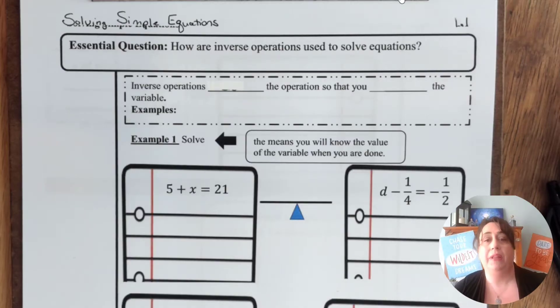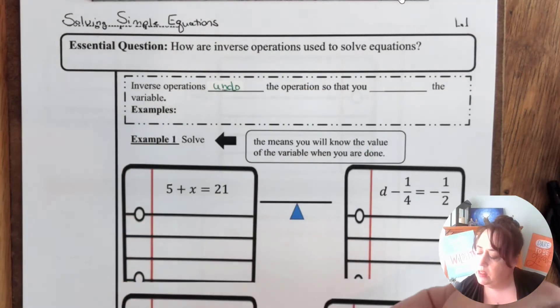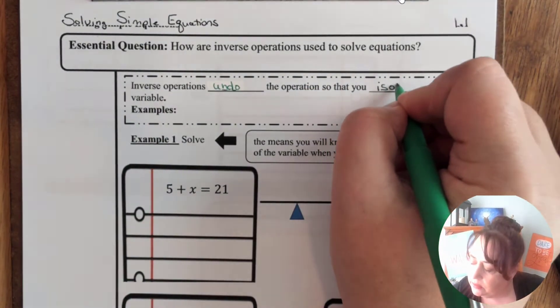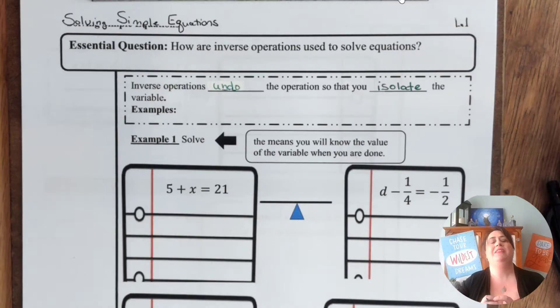Inverse operations blank the operation so that you blank the variable. Inverse operations, what do they do? They undo the operation so that you isolate. Now some of you might not know what isolate means. If you were put into isolation, that means that you are put all by yourself. So what we're trying to do is we're trying to get the variable all by itself. You might want to add that reminder right here that that means all by itself. Remember if I'm going too fast, you can pause the video and write that in.